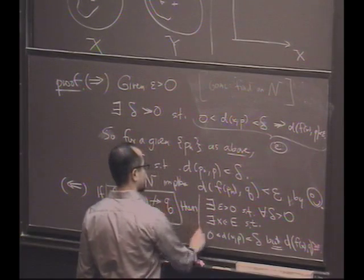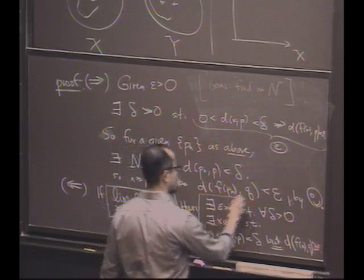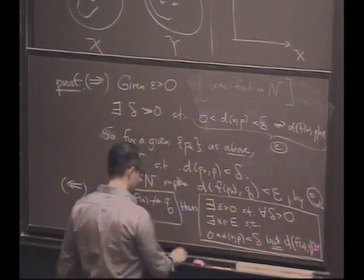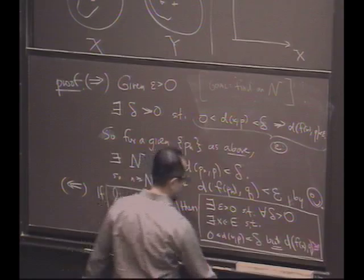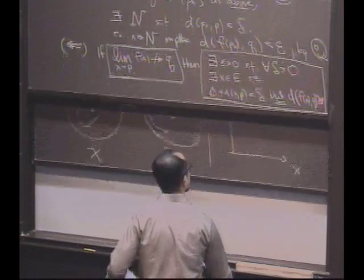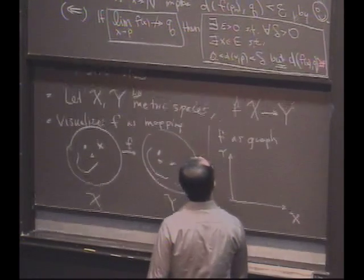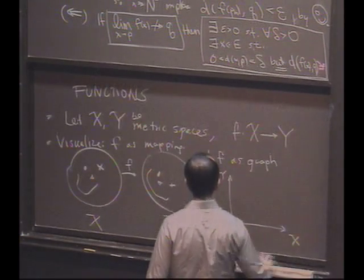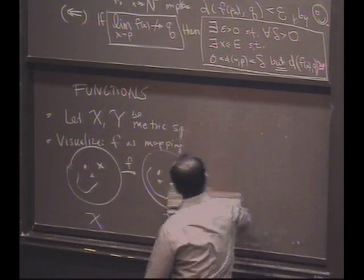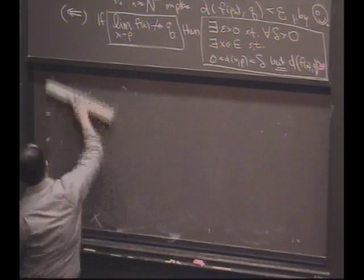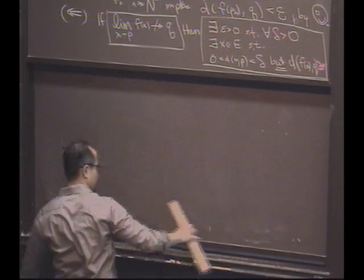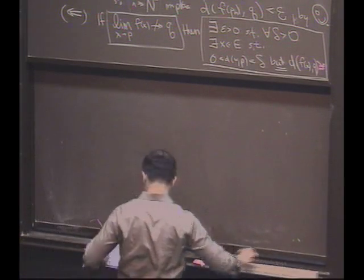So how are we going to use this fact? This is what we know so far. Can you use this fact to construct a sequence that can't converge to Q?